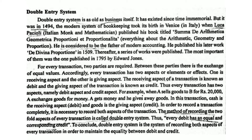In order to record transactions completely, the method of recording the two-fold aspects of every transaction is the double entry system. Thus, every debit has an equal and corresponding credit.